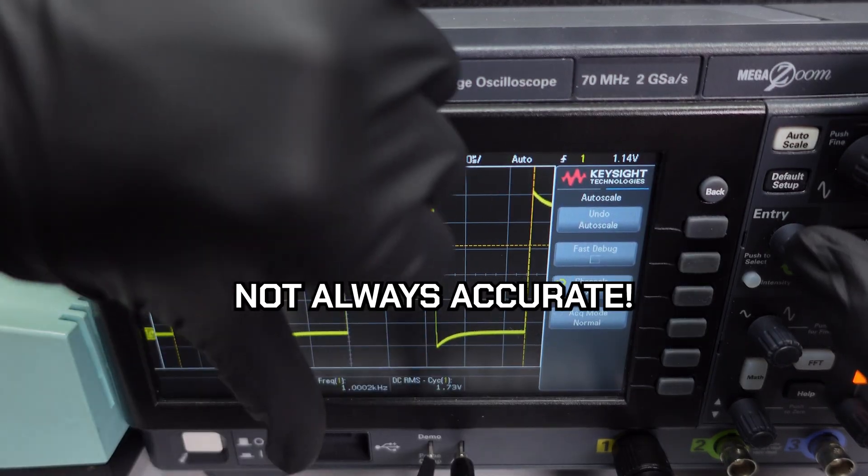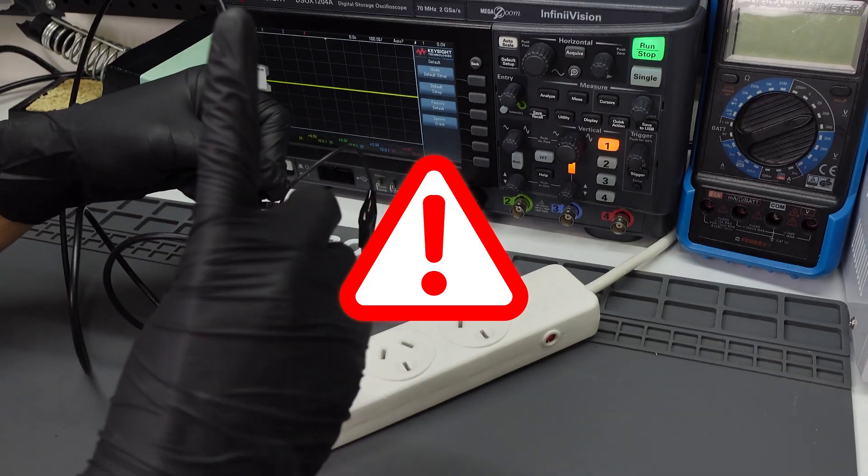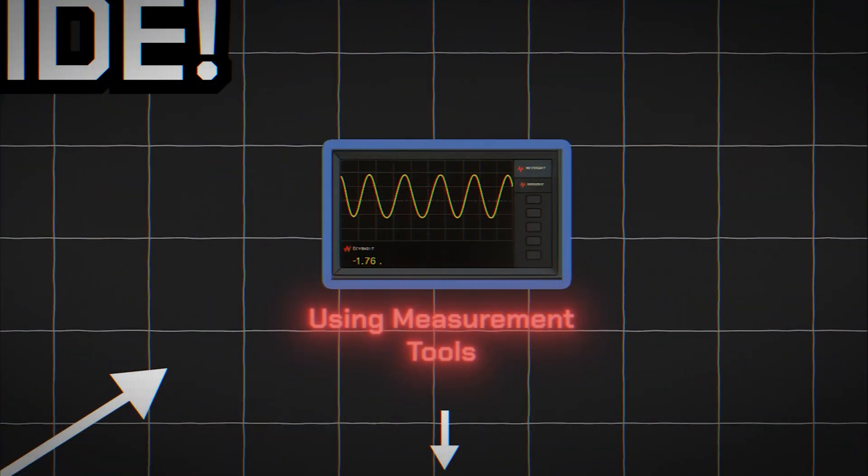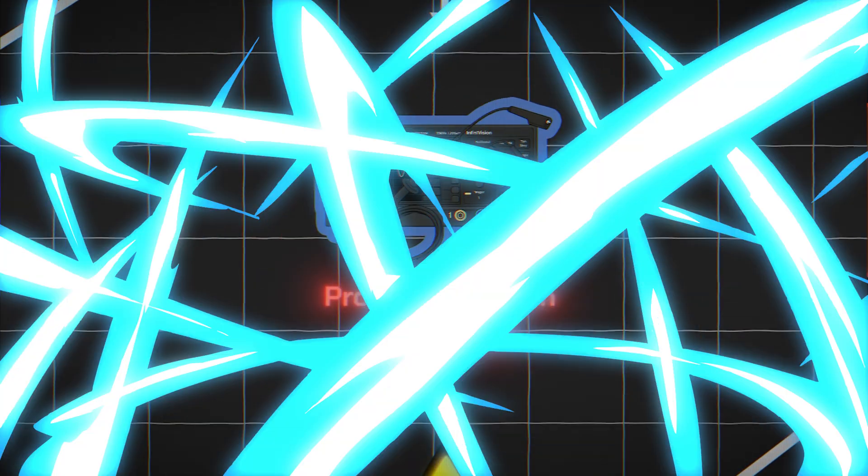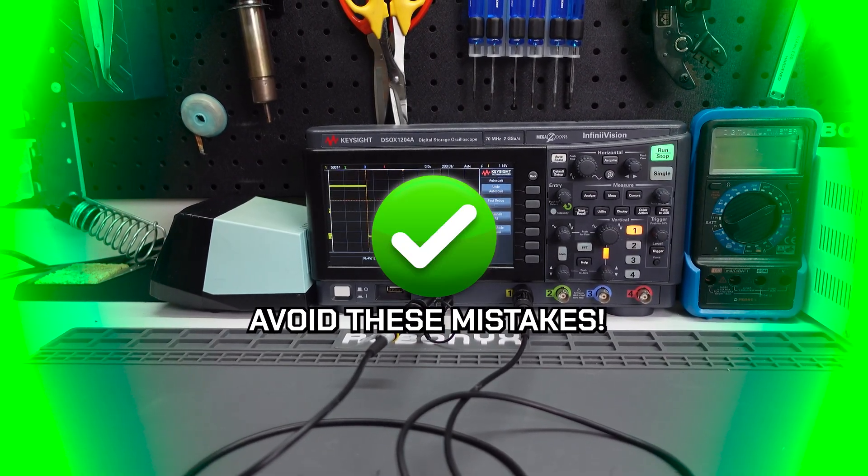Because just seeing a waveform doesn't mean it's accurate. And if you're not careful, you could damage your oscilloscope or even yourself. Here's everything you need to know to get clean, accurate measurements while avoiding costly mistakes.